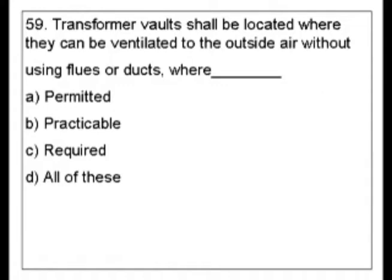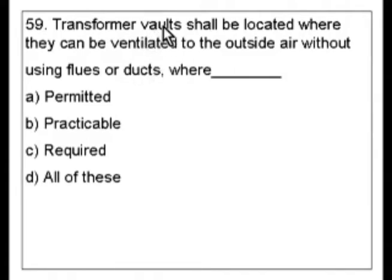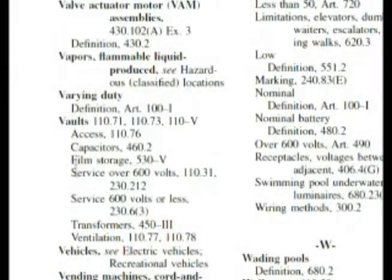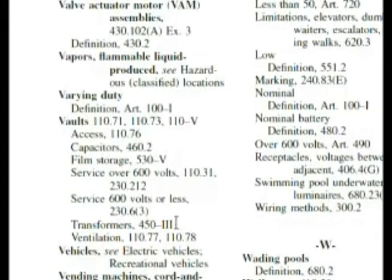Looking at this, there are two things I might look at: transformers or vaults, and maybe ventilation. But I'm going to go with vaults on this one. Here we are in the index at vaults, and if we go down here we see transformers, and it's 450 dash Roman numeral 3.